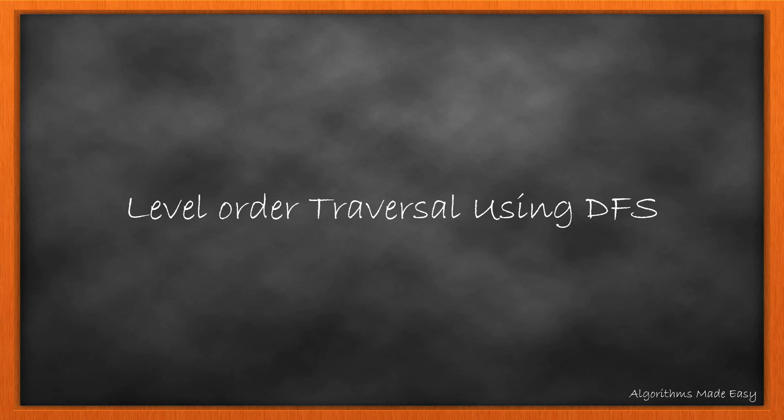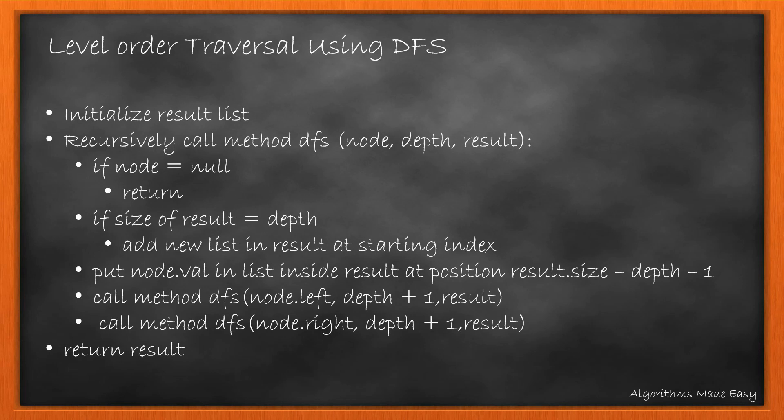Let's see how we can apply the same using depth first search. We initialize the result list, then call a method recursively with 3 parameters: the node, depth, and the result list. Inside the method, we first check if the node is null — if it is, we return. Then we check if the size of result is equal to depth, which signifies that the result does not yet contain the list for this level. So we create a new list and insert it at the starting index. We then put the value of the node into the list at position result.size - depth - 1, and call the method for both left and right children with increased depth. At the end we return result.